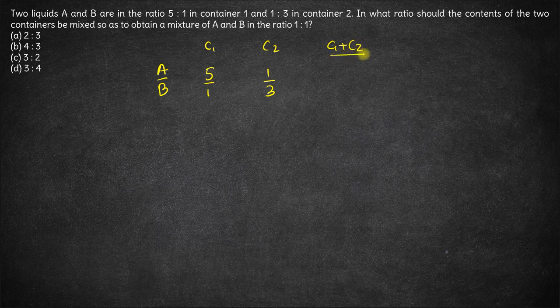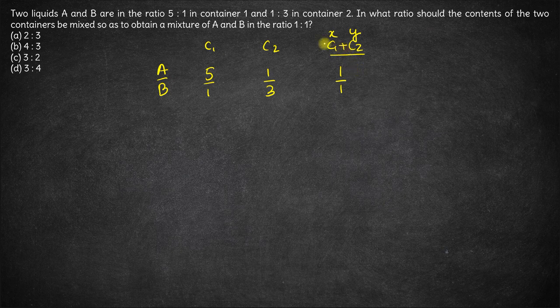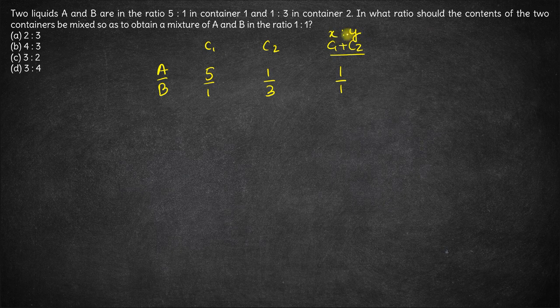When the two containers are mixed, let's say x liters of container 1 and y liters of container 2 is mixed. Now the ratio of A and B in this mixture becomes 1 is to 1. We have to figure out the ratio of x and y.